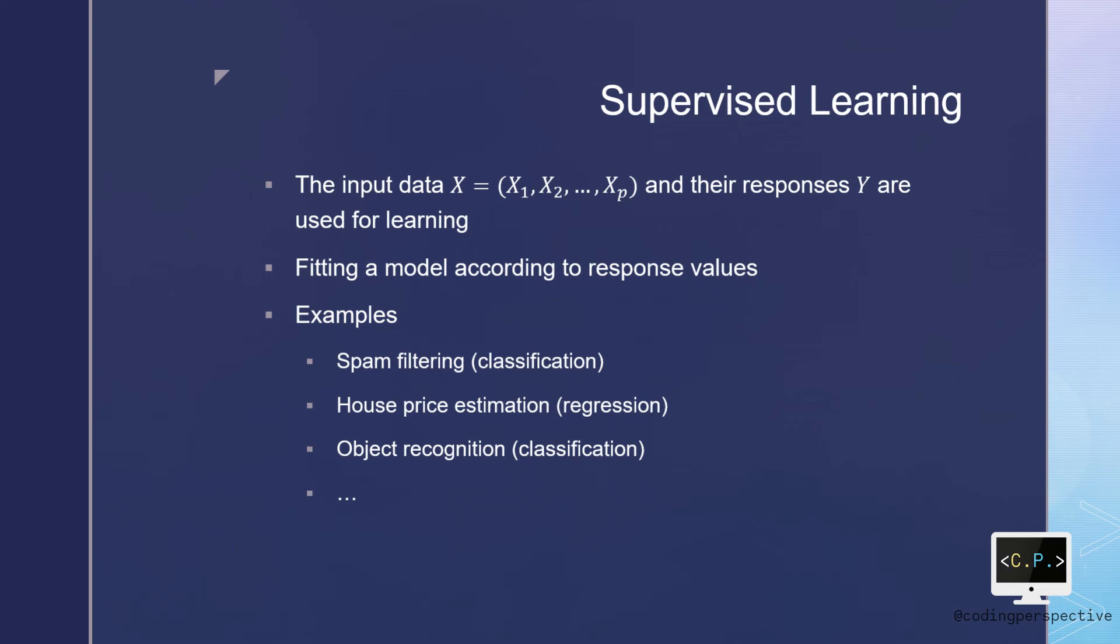If you think about the house price estimation task, you have the historical data, where the sales price are used as y values, and the features of each house are used as x values. Another example can be object recognition, where you are trying to observe some of the shapes in your images.